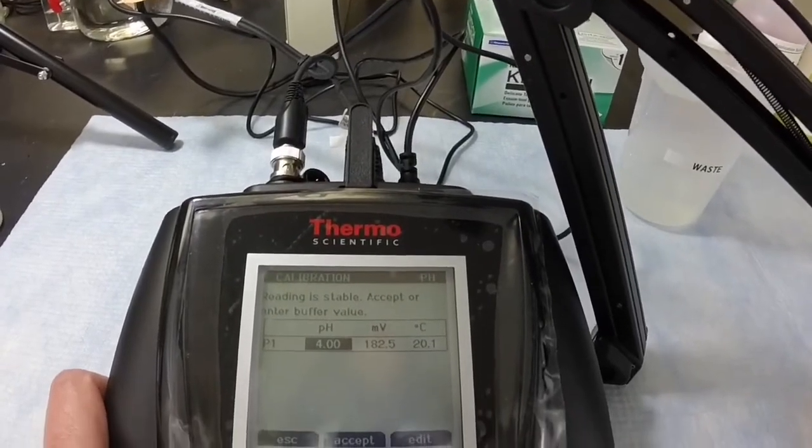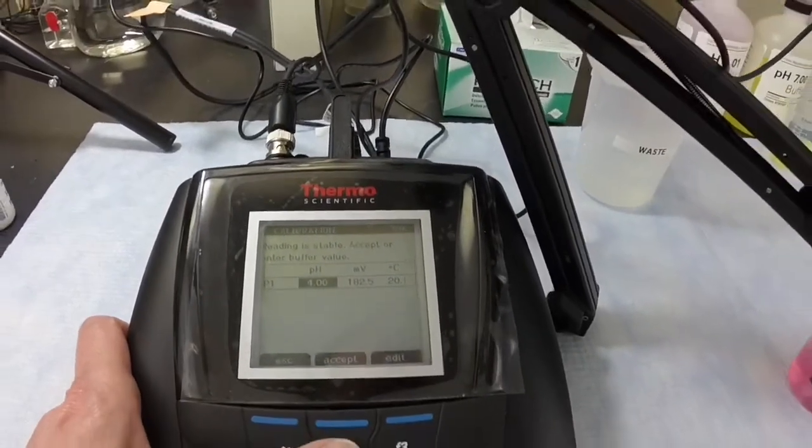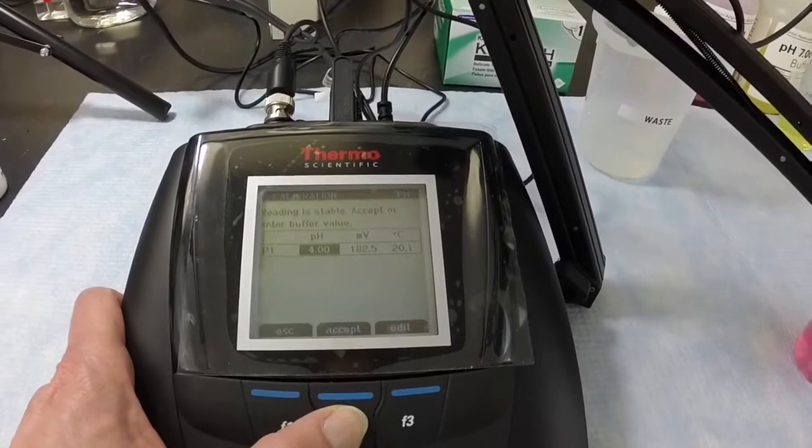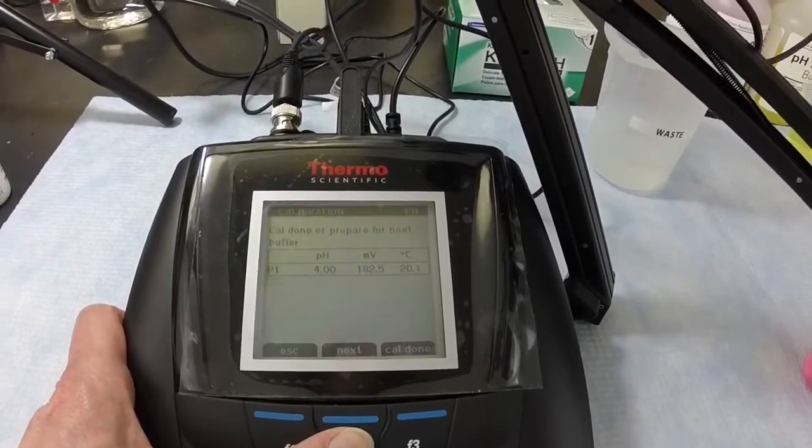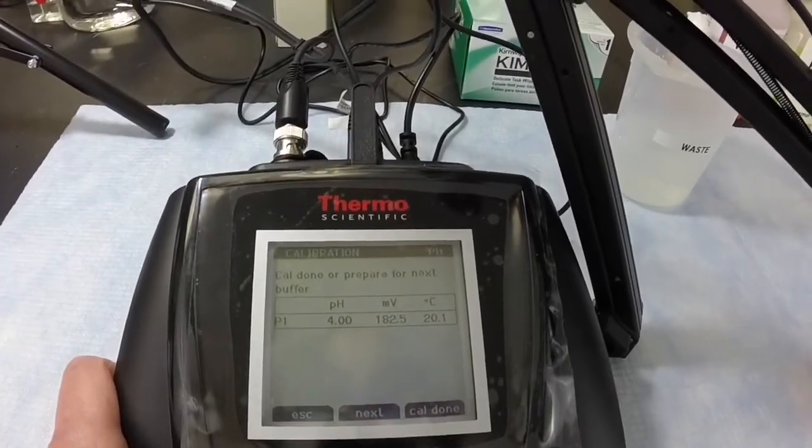Otherwise, measure the temperature of the buffer and enter that value into the meter before calibration. Press accept to complete the first calibration point, then press next to move to the next calibration point.